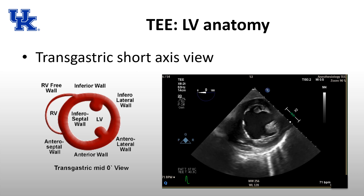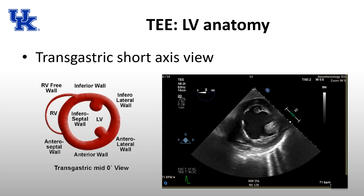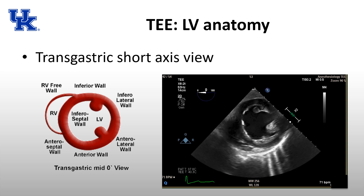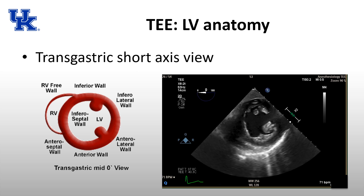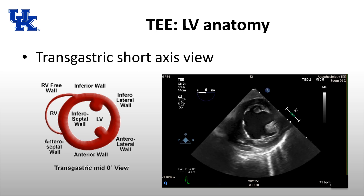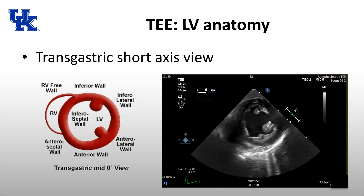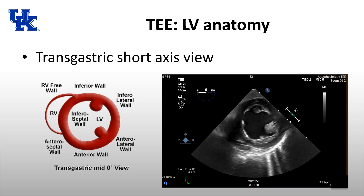In the heart, the anterior wall is across from the inferior wall — remember this as AI, artificial intelligence: anterior and inferior. The other four walls are logically named: anterior septal, inferior septal, anterior lateral, and inferior lateral. So anterior lateral is across from inferior septal, and anterior septal is across from inferior lateral. You can see all these walls in the transgastric short axis view.